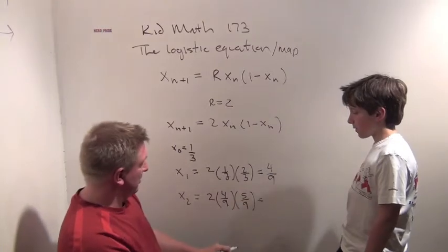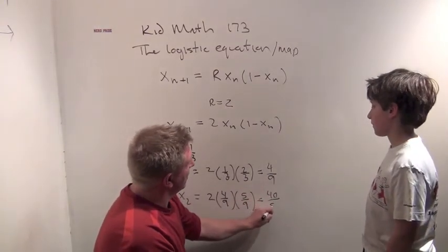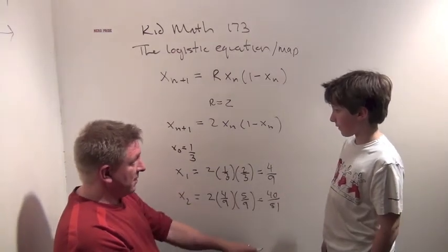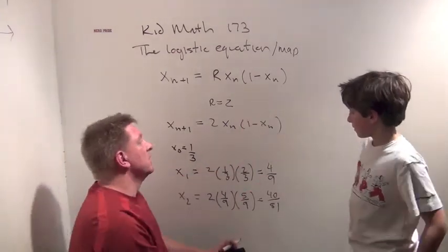And what is this equal to? That's going to be 40 over 81. These are getting closer and closer to a half. It looks like they are. Very good observation.